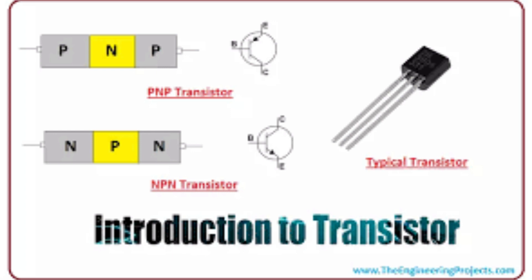The other two terminals are known as the source and the drain. By applying a voltage to the gate, the flow of current between the source and drain can be either allowed or blocked.